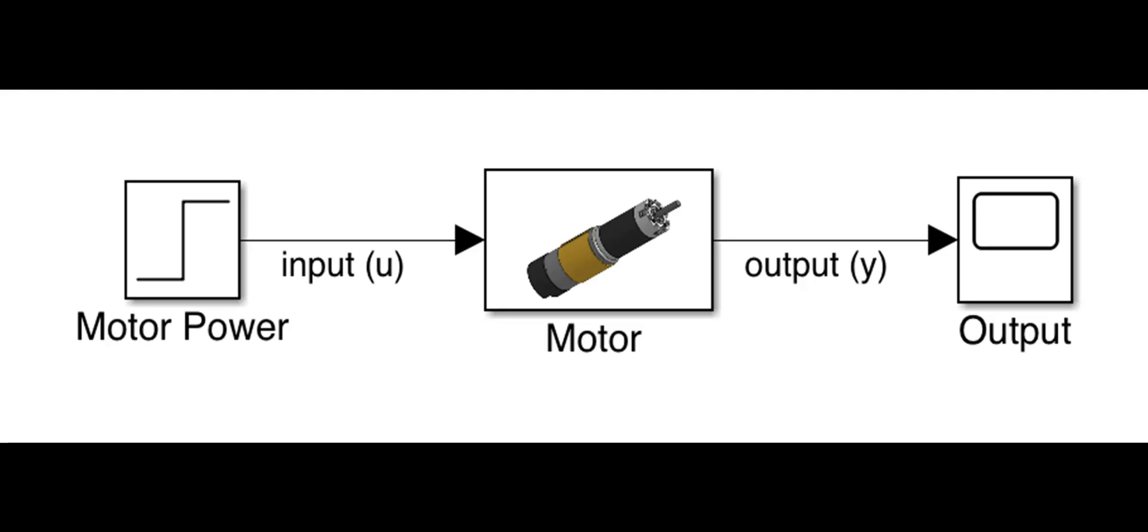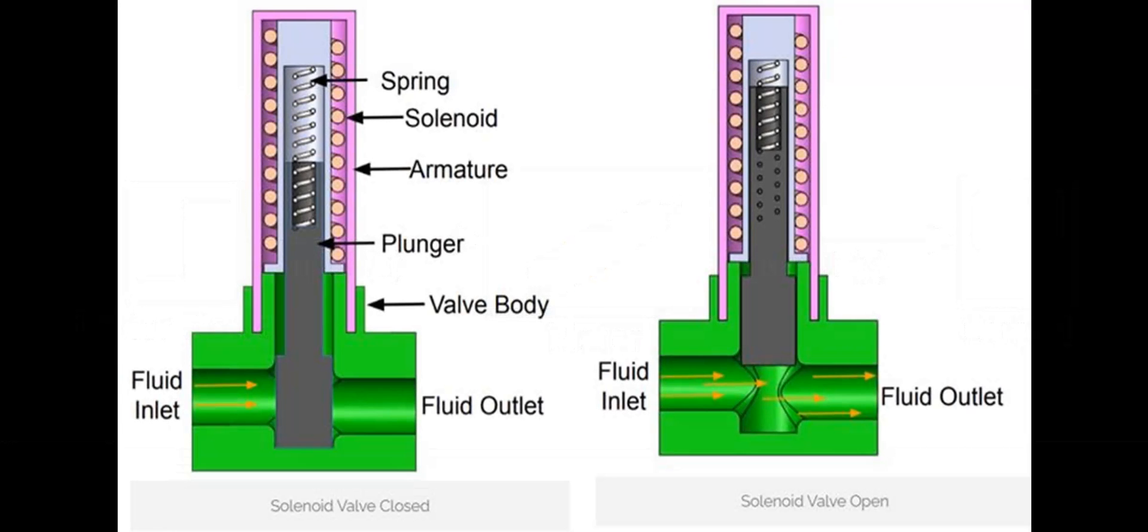Another situation where open loop control is feasible is one where there are only a limited number of possible outcomes and an incorrect outcome is unlikely. For example, a solenoid either pulls a plunger to a final position or releases it to return it to its starting position.